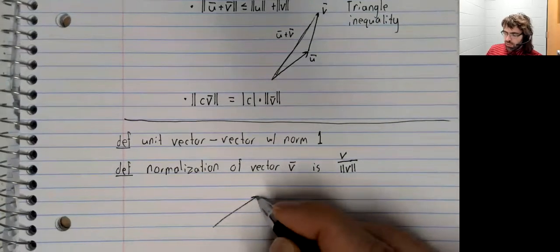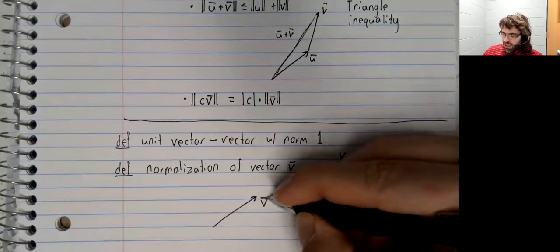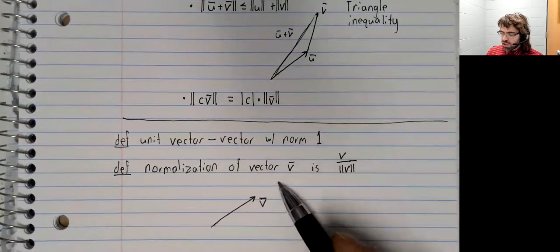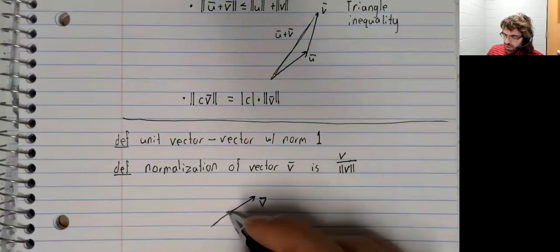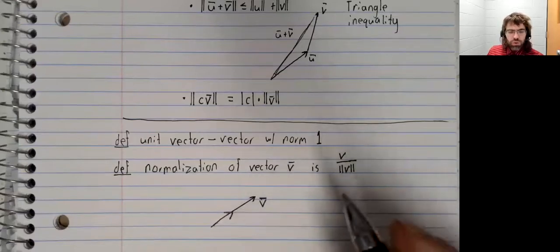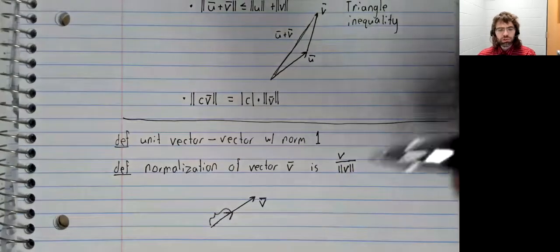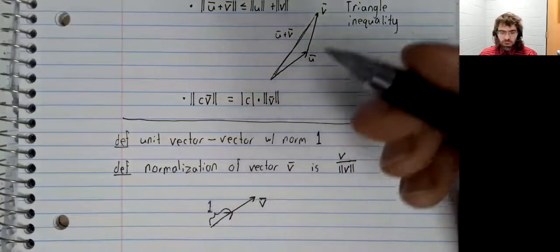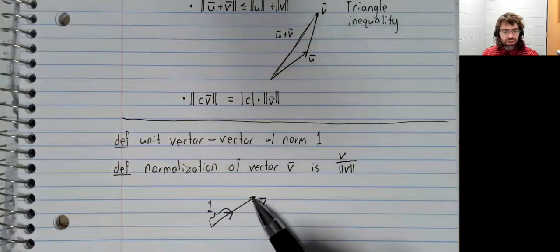So what the normalization is, it takes v and it scales it. It either stretches it or it compresses it to give us a new vector that's pointing in the same direction as v, but has a norm of one. So this is the normalization of this.